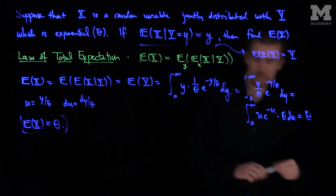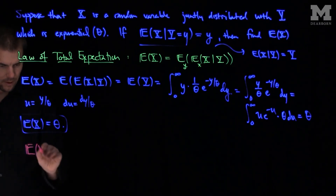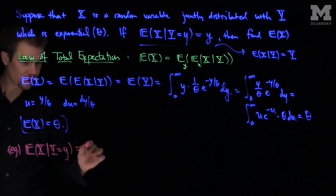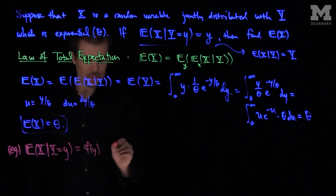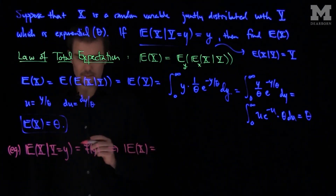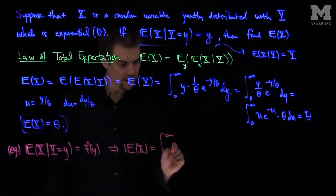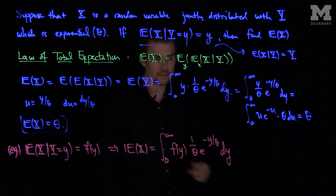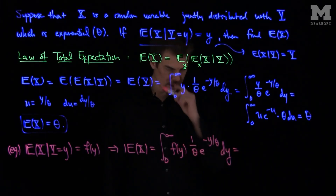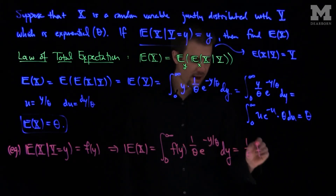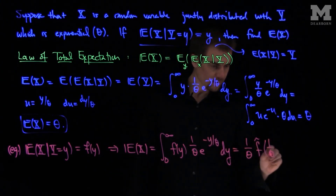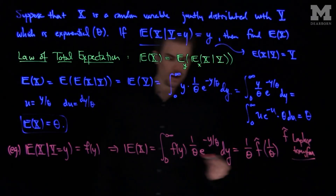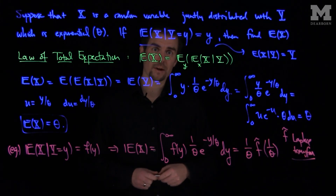So our expected value of x in this problem is just equal to theta. Now, had we been given a different conditional expectation — for example, if the expected value of x given y equals little y was some function f of y — then we'd have the expected value of x equal to the integral from zero to infinity of f(y) times one over theta times e to the negative y over theta dy. We can write this in terms of the Laplace transform as one over theta times f-hat of one over theta, where f-hat is the Laplace transform. So with exponential random variables, you can use tools from Laplace transform theory to evaluate expected values and moments. Thank you very much.